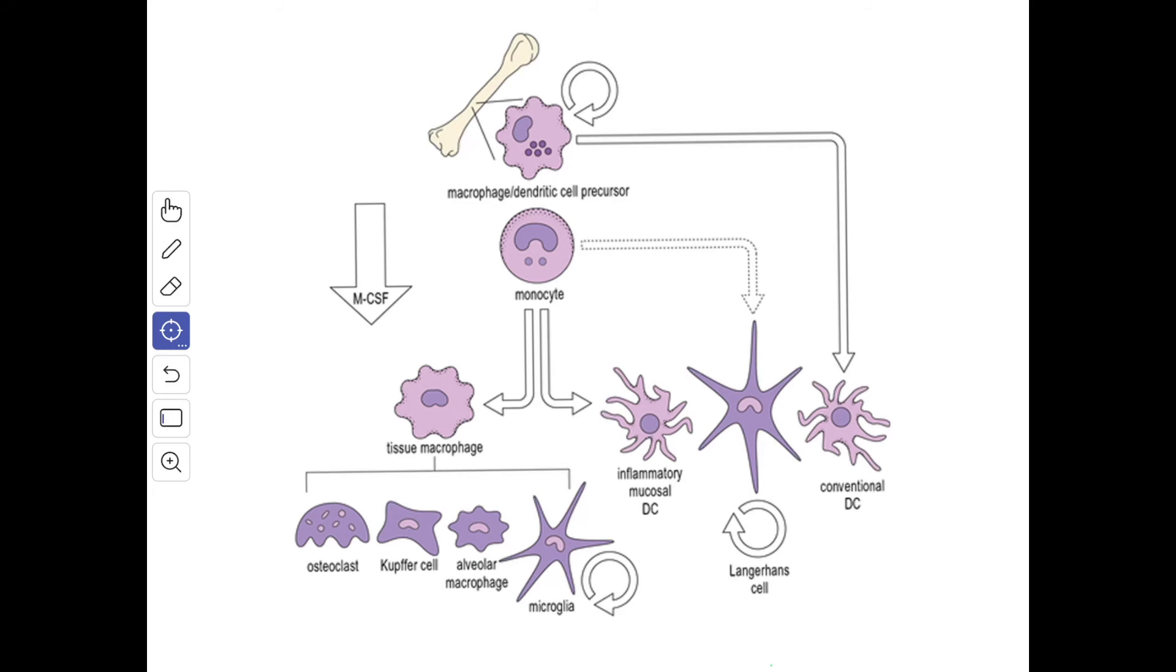In the lung, the alveolar macrophages engulf the inhaled particles. They are seen as dust cells. In the spleen and the liver, the macrophages destroy aged and damaged erythrocytes. Then their role in the immune responses.